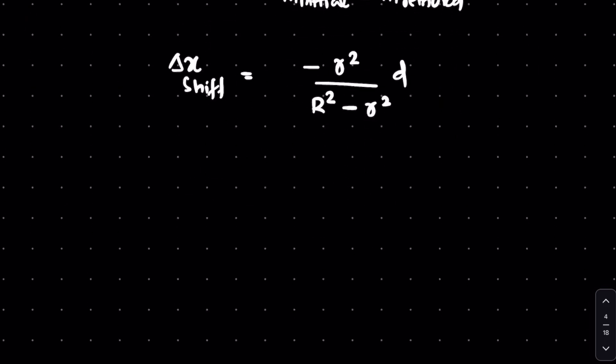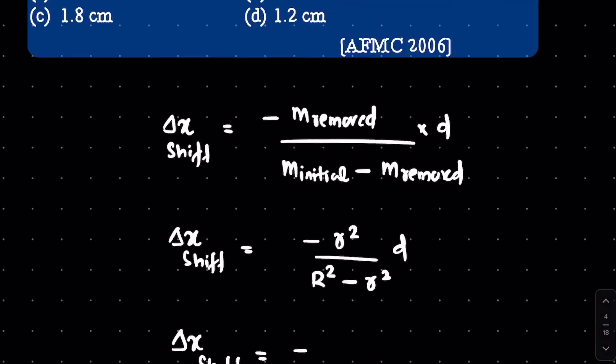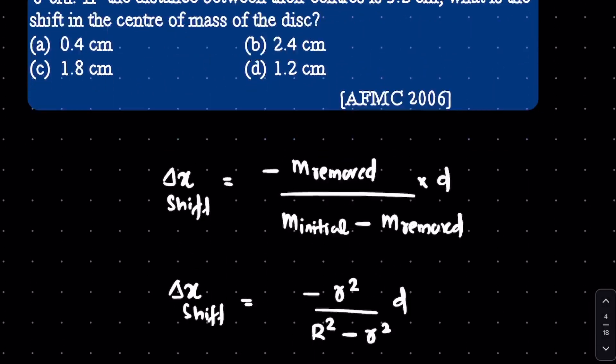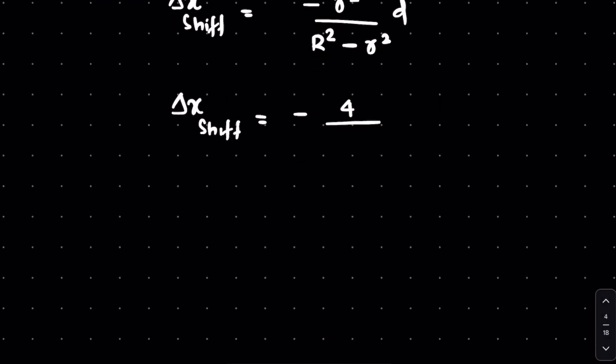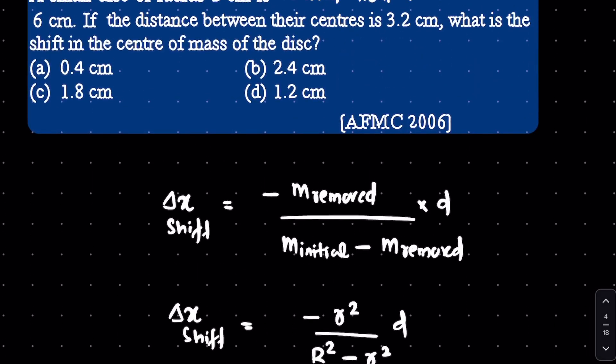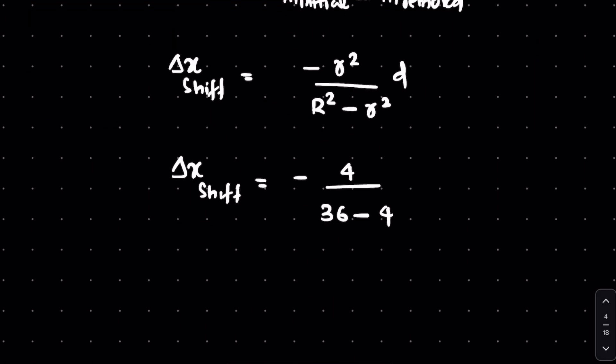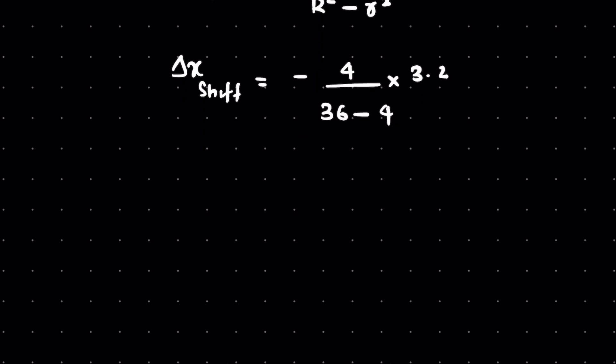Directly, we can substitute. Delta x shift equals minus, what is r squared? It is basically 2 cm, so 2 squared that is 4 divided by, and the capital R is 6 squared, that is 36 minus 4, into d. d is 3.2. So this equals minus 4 times 3.2 divided by 36 minus 4 is 32.